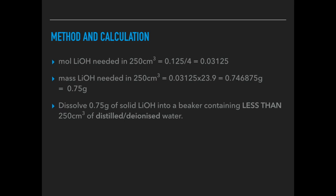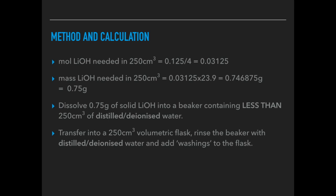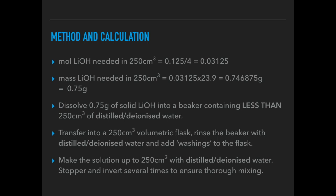Once I've weighed out the lithium hydroxide I would need to dissolve it into a beaker containing less than 250 cm³ of distilled or deionized water. I would normally get students to dissolve it in about 100 cm³. Once you've dissolved it you then transfer into a 250 cm³ volumetric flask, and then you should rinse the beaker again with distilled or deionized water and add what we call the washings to the flask. We're making sure that all of that lithium hydroxide goes into the volumetric flask. Then the final thing we do is make the solution up to 250 cm³ again with distilled or deionized water. Stopper and invert the flask several times to make sure everything is thoroughly mixed together.